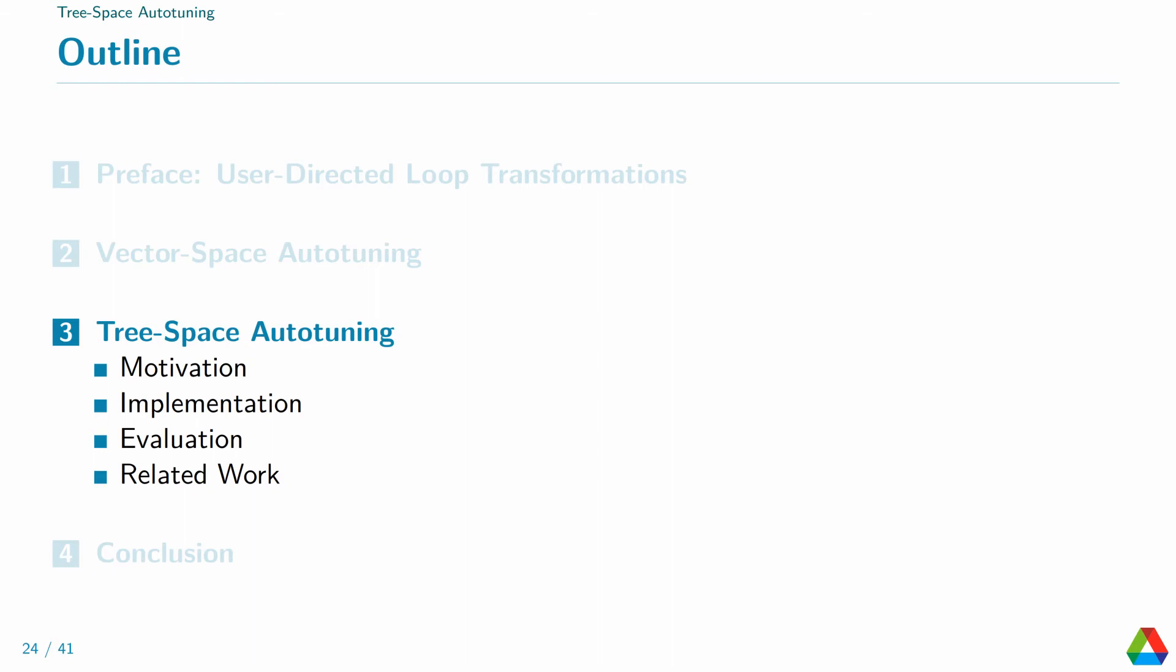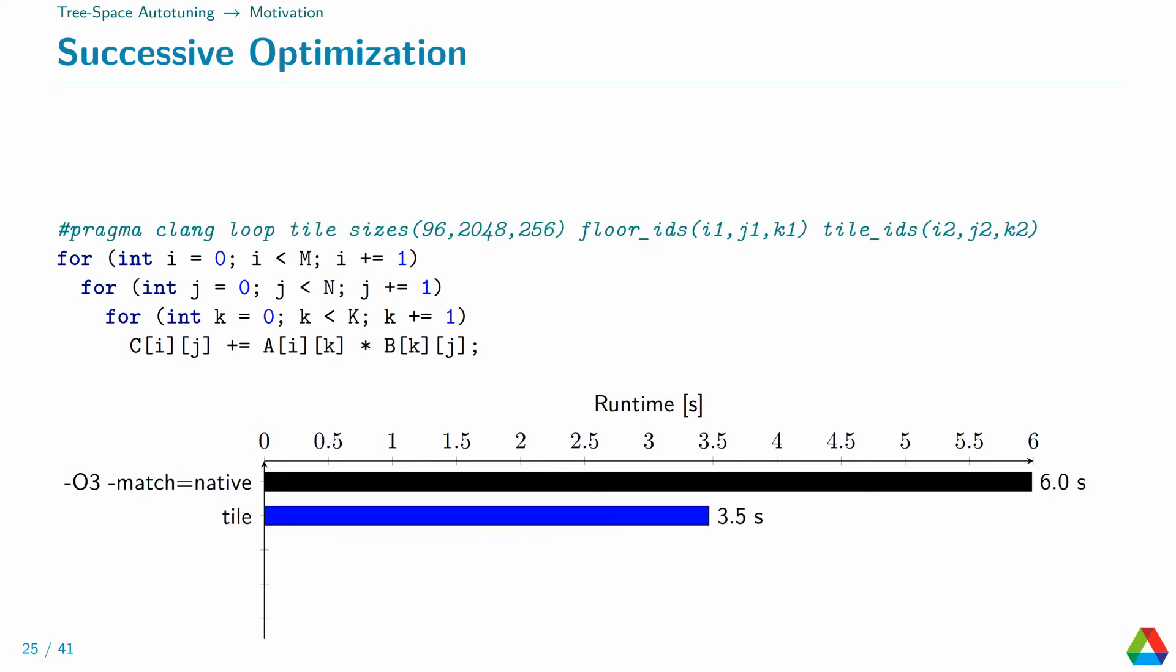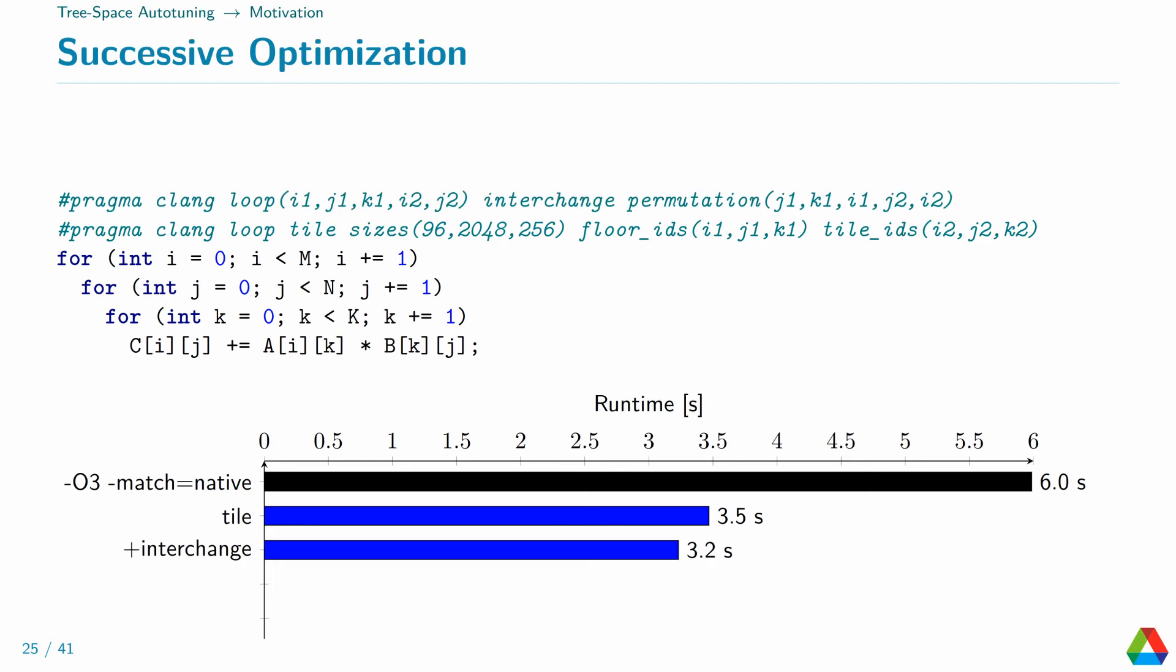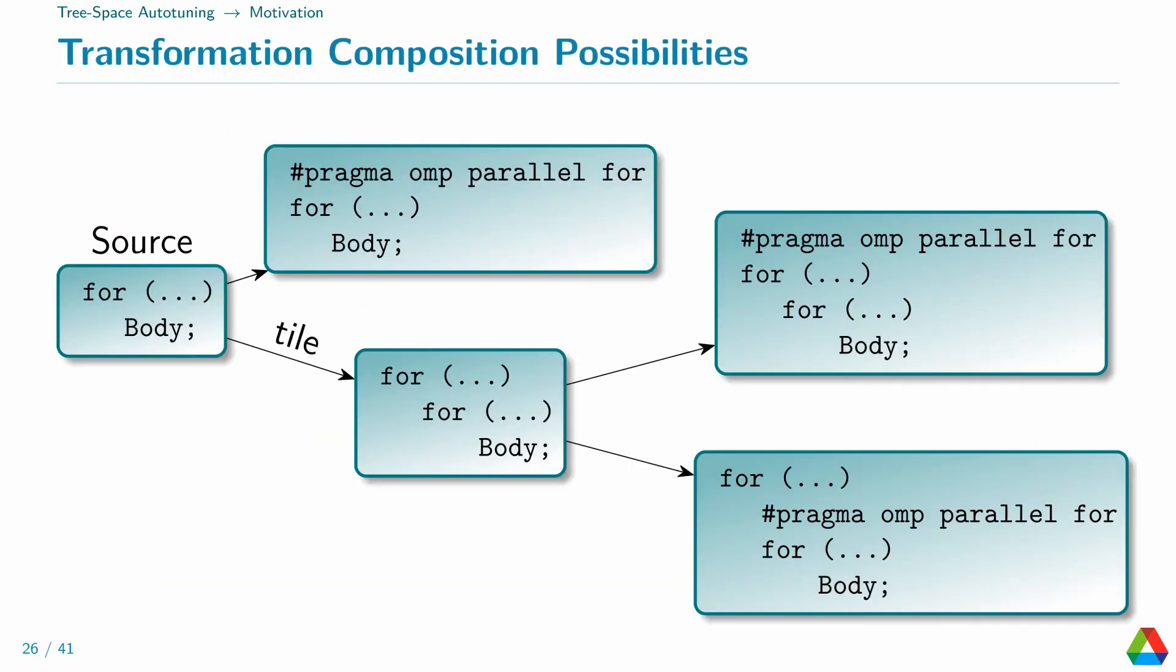Does autotuning always need to be based on a vector space? Let's look into a tree-shaped search space. But first, let's do some motivational observation. How does a performance develop when not applying all transformations at once? Let's go back to the matrix multiplication example. Without any transformation, it executes in 6 seconds. When applying tiling, it's reduced to 3.5 seconds. With an additional loop interchange, we get 3.2 seconds. The array packing of B makes it another half a second faster. And when also packing array A, we are at 1.7 seconds. That is, simulated annealing that only adds more transformations could automatically find the optimization sequence. The search space for that is a tree, rooted in the configuration that does not apply any optimization.